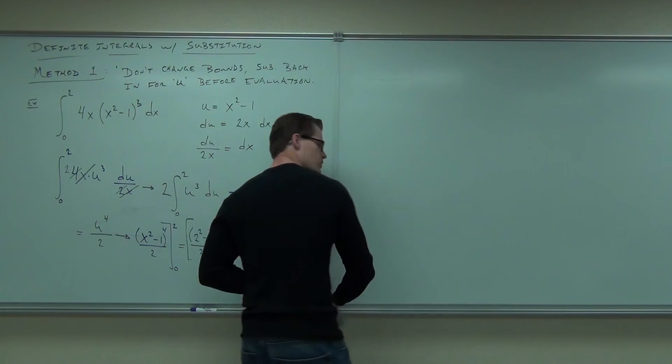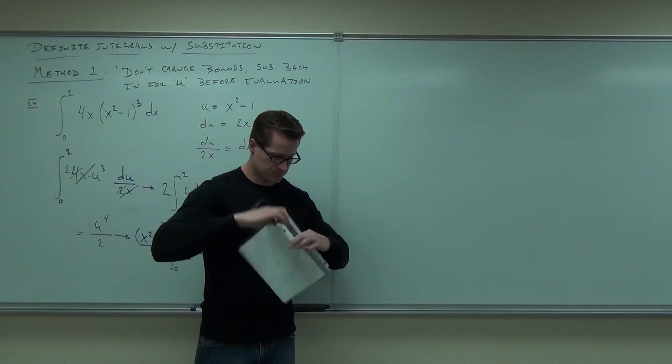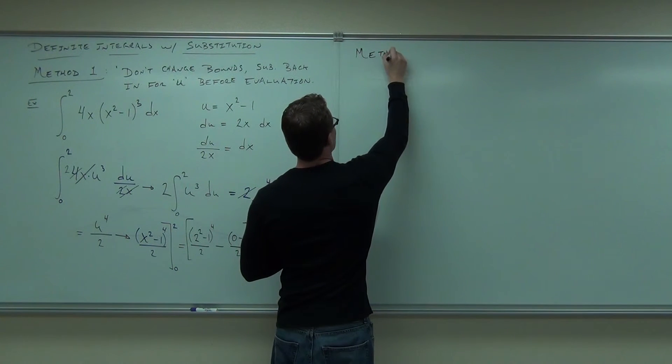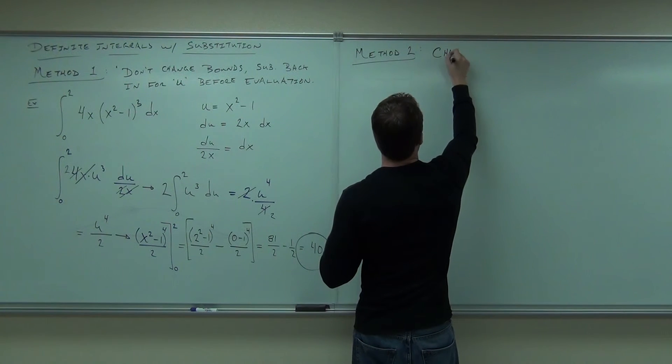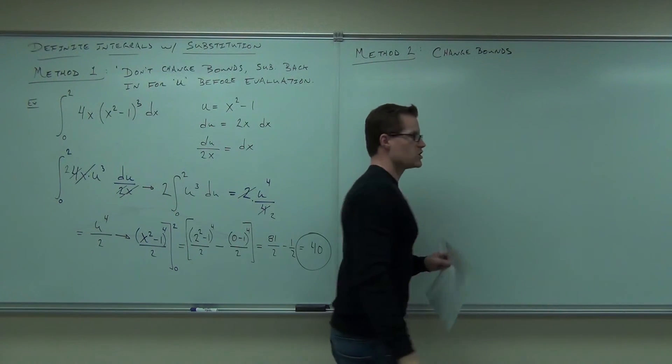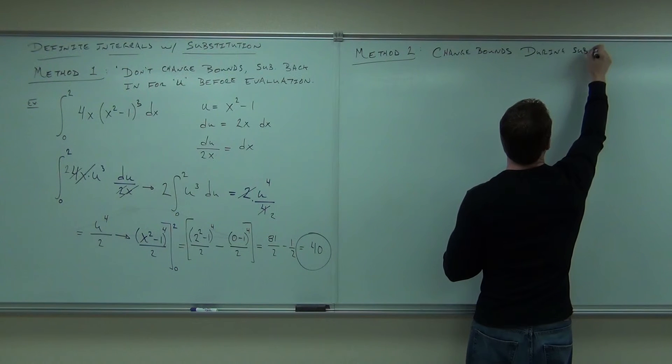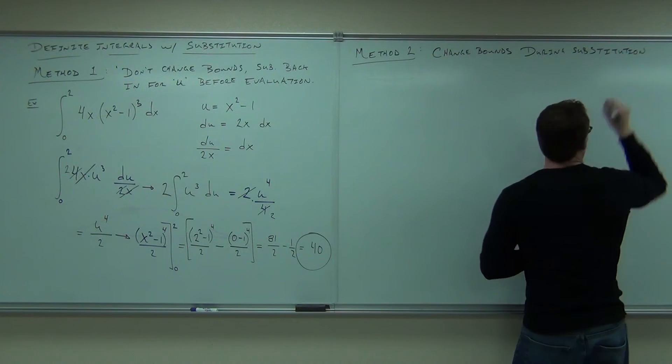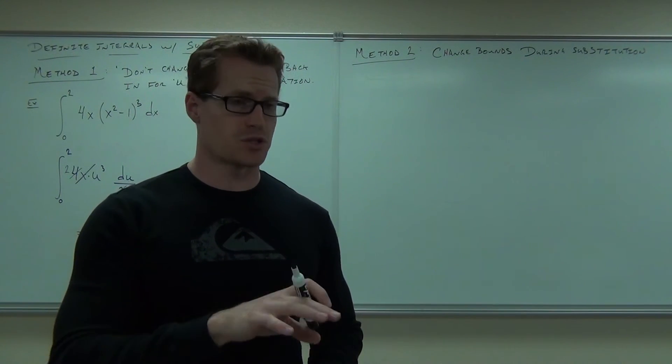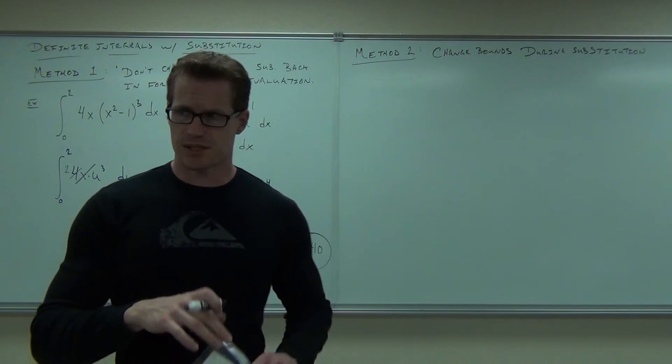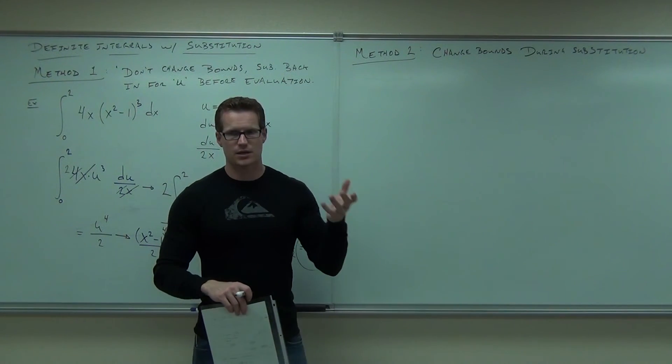Do you have a preference on which method? I'll tell you which method you use on the test when I want you to use it. If I don't tell you a method, you do whatever method you want. Okay? You must use it to learn both methods. Okay, method 2. Method 2 is you change bounds. You change bounds during your first substitution. If that's the case, here's where I'll give you like a little foreshadowing of what's going to happen. You're going to change your bounds from x's into terms of u using your substitution. If you change your bounds into terms of u, do you need to substitute back in at this point for x? No, because they'll be in terms of u. So if you do method 2, you change your bounds, and then you do not substitute back in before evaluation.